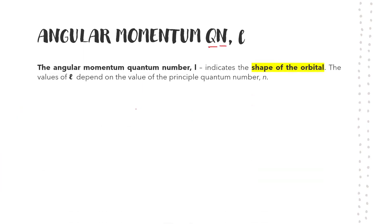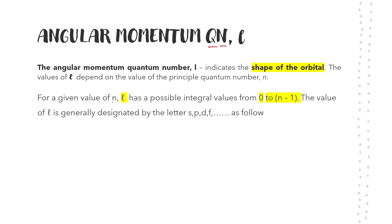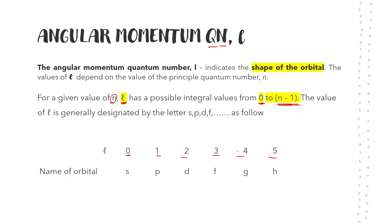L — angular momentum quantum number. L actually refers to the shape of the orbital, and the value of L depends on N. L can start from 0, but the maximum value is N minus 1. So it can be 0, 1, 2, 3, 4, 5, and so on, depending on the value of N.